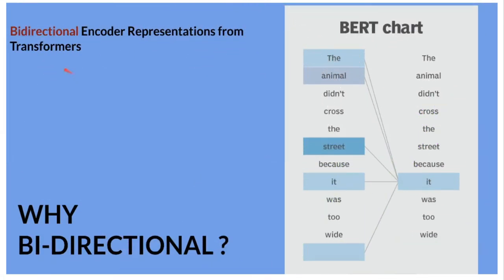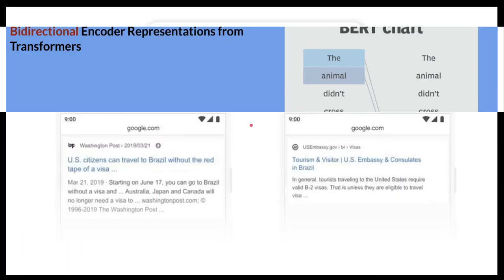As you know, BERT means Bi-directional Encoder Representation from Transformers. So the question is: why is it called bi-directional? BERT is called bi-directional because it works in both directions — it analyzes the words in both the left and right direction, so that the Google search engine can understand our search statement in a better way.